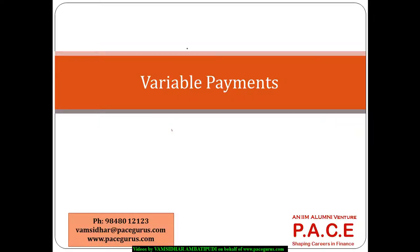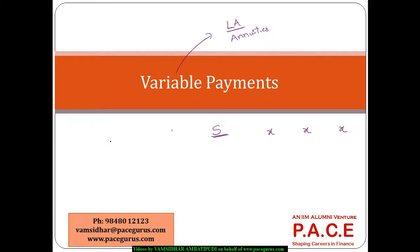Now let's look at the situation where for your life assurance policy or for your annuities the payments are not fixed — they keep changing. It's not like in a life assurance policy where a sum assured S is paid on the death of the person, or in an annuity where some fixed amount X is paid equally until the person is alive. Instead, the payment amount can vary.